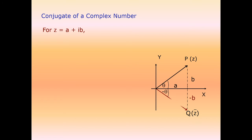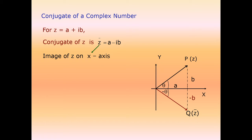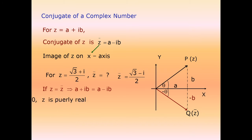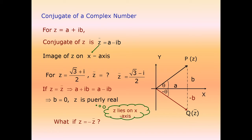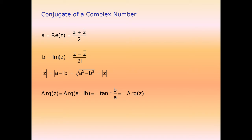The conjugate of a complex number z = a + iota·b is z̄ = a - iota·b, which is its reflection about the x-axis. If z = z̄, then b = 0 and z is purely real (lies on x-axis). If z = -z̄, then z is purely imaginary (lies on y-axis). The argument of z̄ is -arg(z), i.e., minus the argument of z.